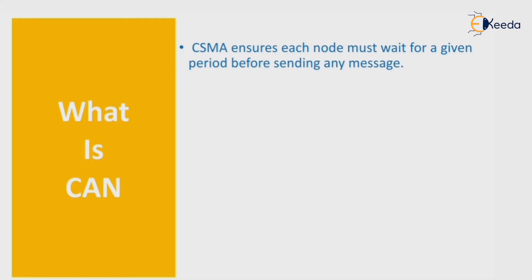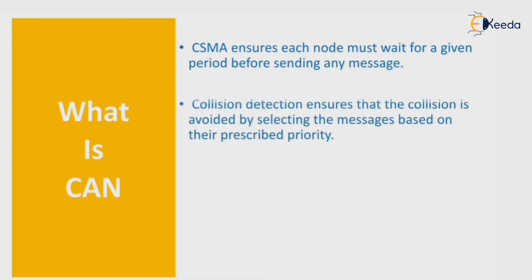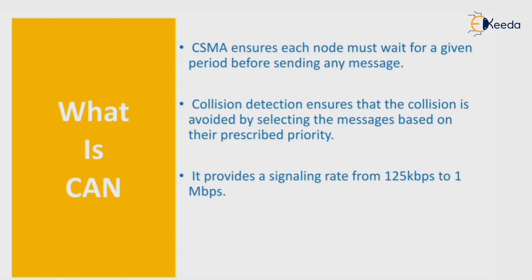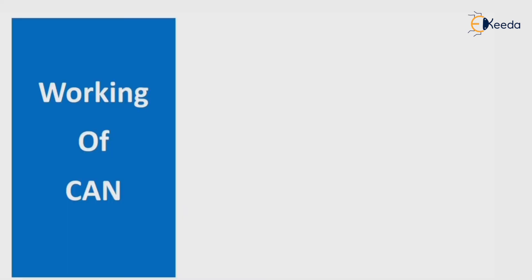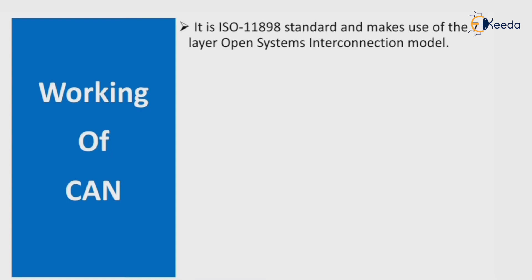CSMA ensures each node must wait for a given period before sending any message. Collision detection ensures that collisions are avoided by selecting messages based on their prescribed priority. CAN provides a signaling rate from 125 kbps to 1 Mbps and supports up to 2048 different message identifiers.